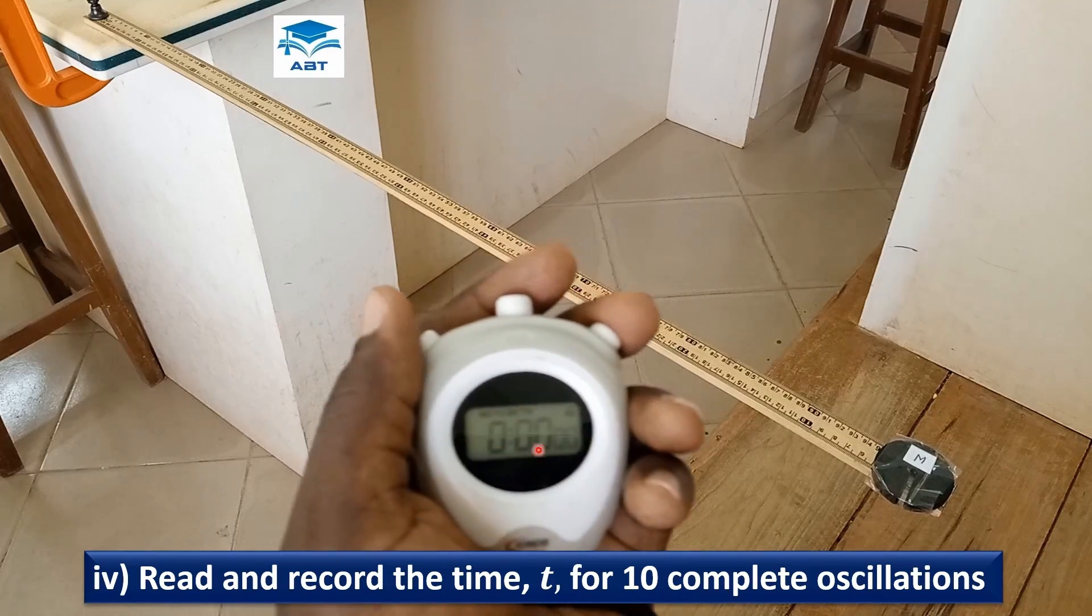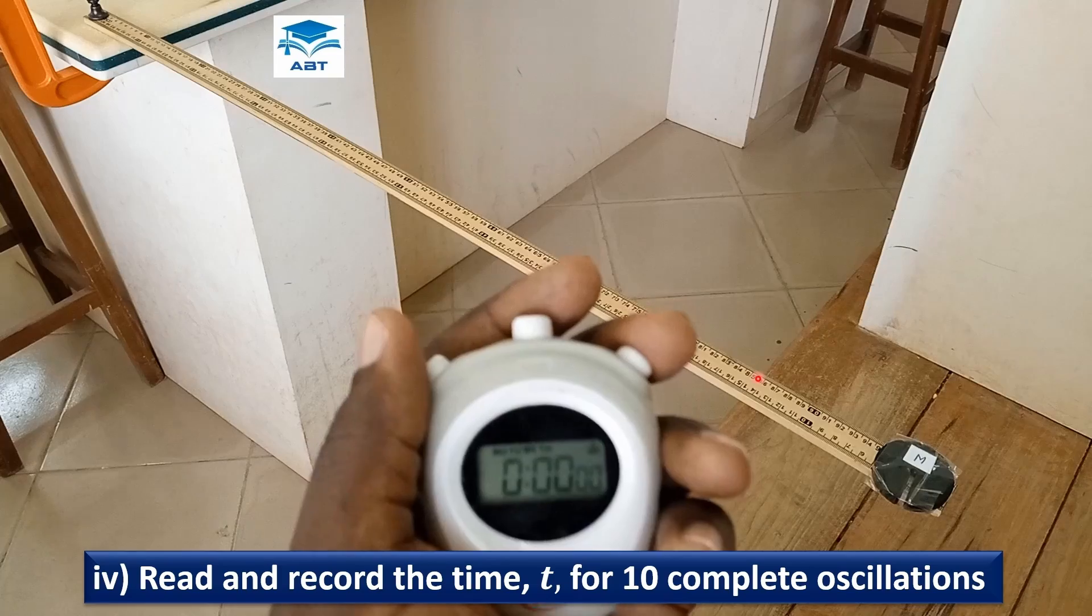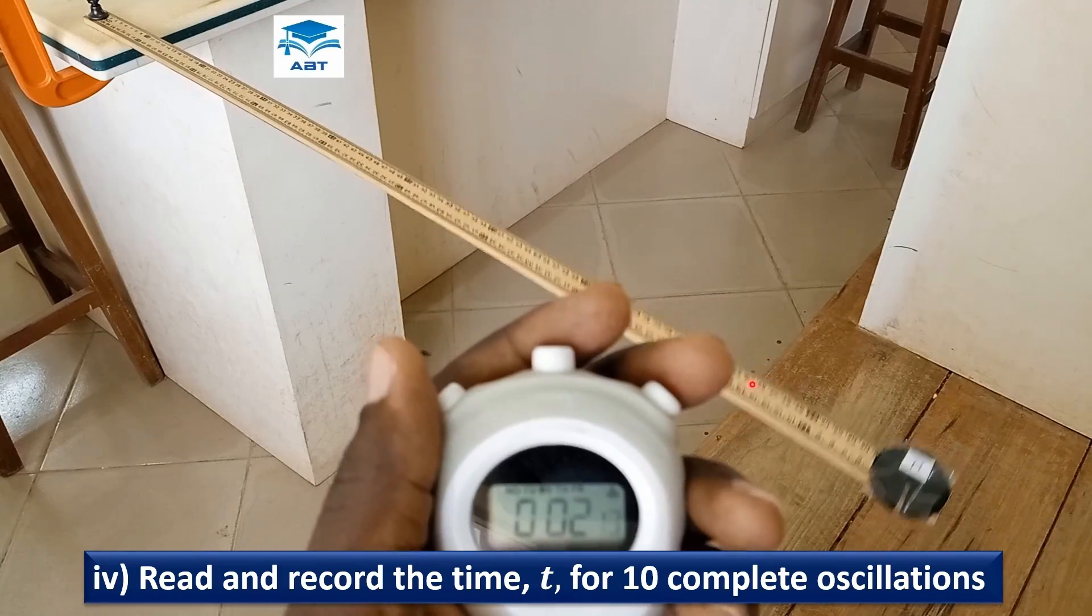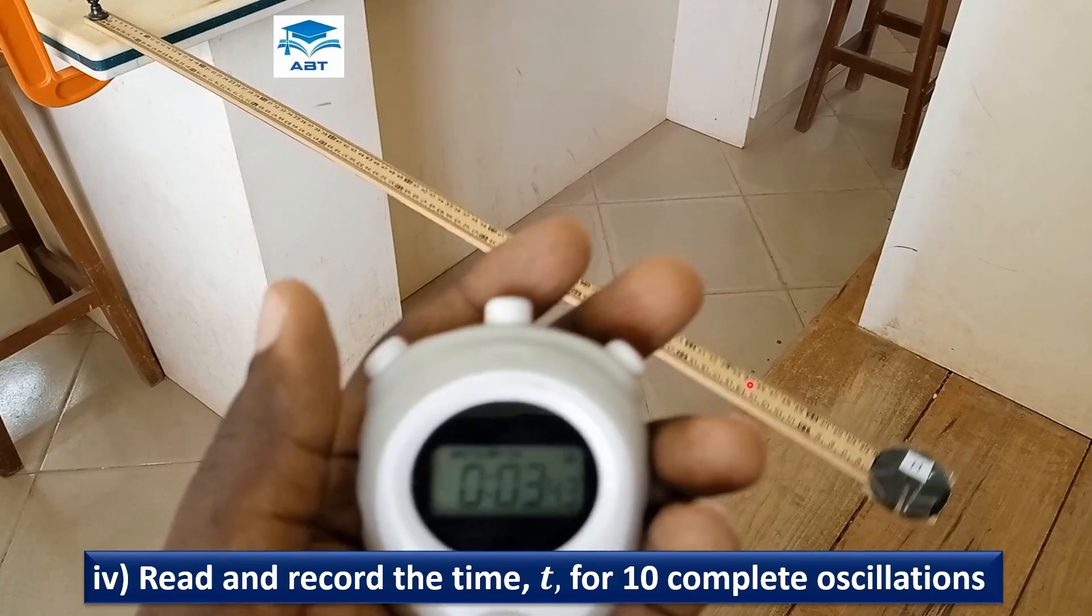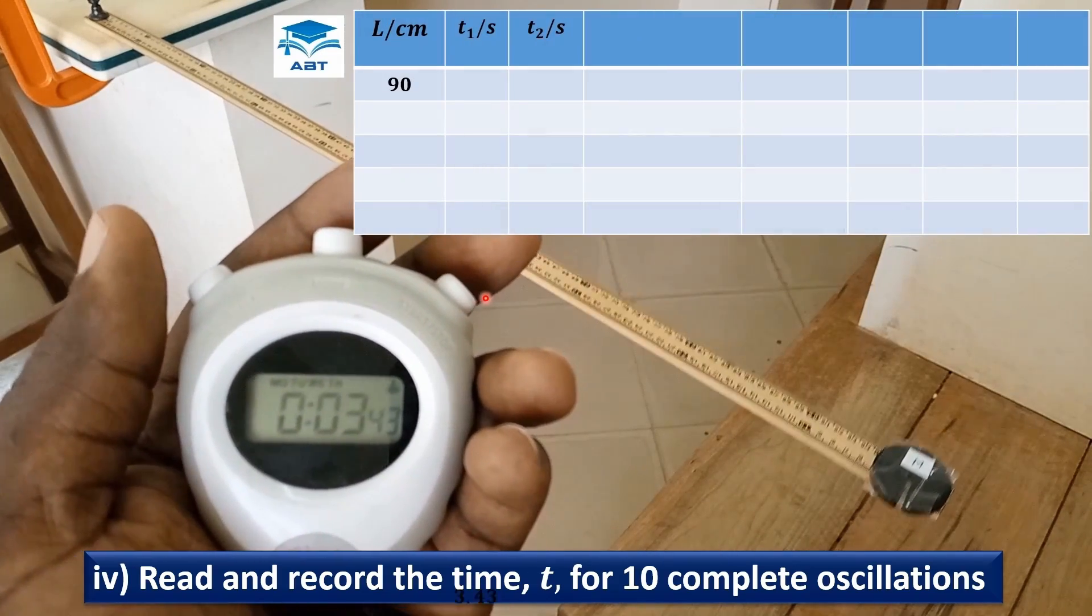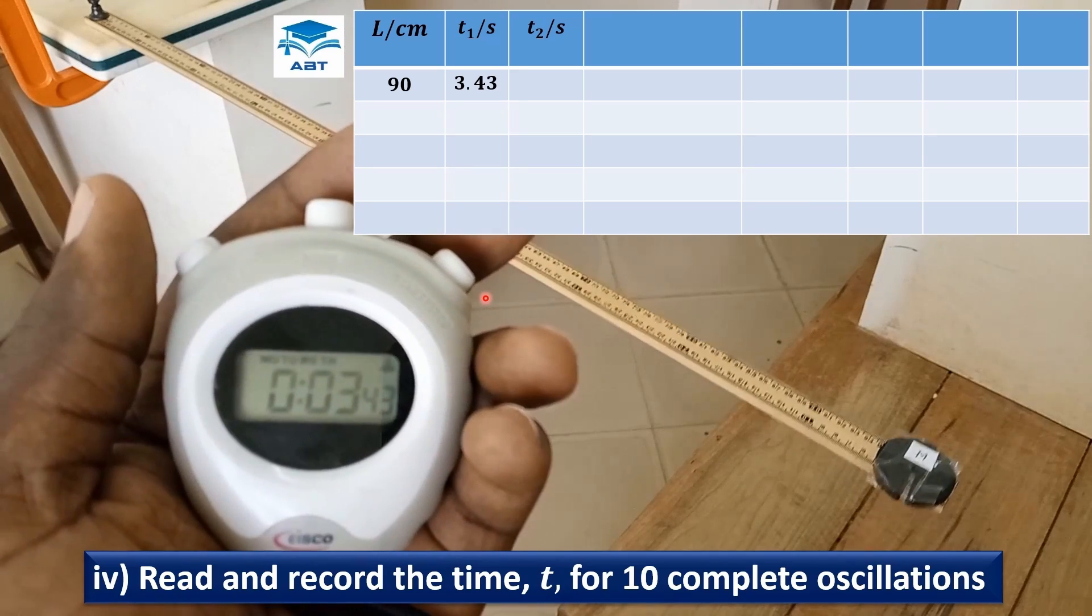So, start the stopwatch: 1, 2, 3, 4, 5, 6, 7, 8, 9, 10. We have 3.43 seconds.